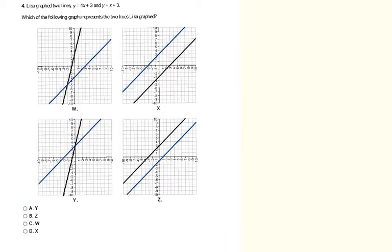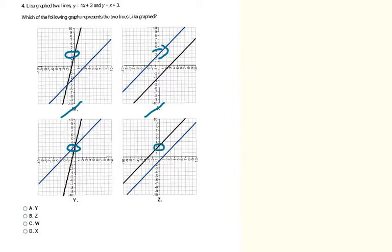This next question is similar, but now the y-intercepts both stay at positive 3, while the slopes change: one has slope 4 and the other slope 1. Since both y-intercepts are 3, I'm looking for two graphs that both cross the y-axis at positive 3. Option W has only one graph crossing at positive 3 — not W. Option X has only one — not X. Option Y has two graphs crossing at positive 3, so it could be Y. Option Z has only one — not Z. Simply knowing both lines cross at 3 on the y-axis gives me the answer Y, which is letter A.